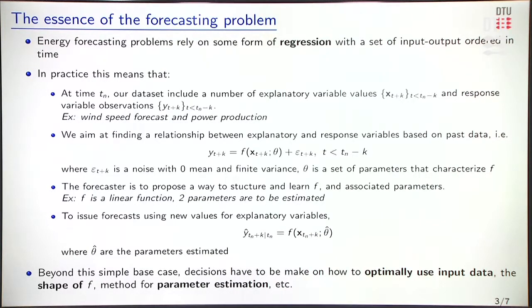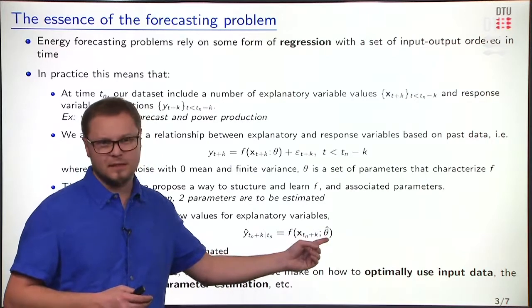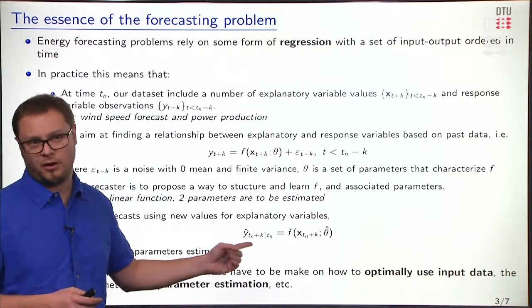Again, for the case of linear regression, we have to learn these two parameters that are the slope and the intercept. Eventually, when one has decided on f and one has estimated the θ parameters, we can use some new values for explanatory variables, and we'll plug them into this function with the estimated parameters to obtain a forecast for power generation.